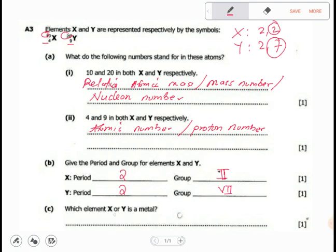Which element X or Y is a metal? Metals are found in group 1 and 2 and those transition metals as well. Group 2 are metals. Group 7 are non-metals. So X is a metal.